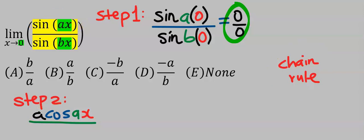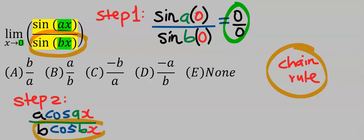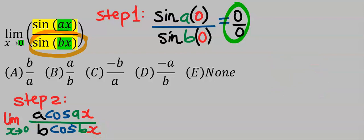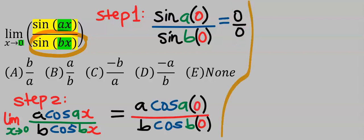Next, let's differentiate sine bx. Applying chain rule, we're going to have b cos bx. Next, let's apply the limit as x tends to zero, that is replacing all the x with zero.